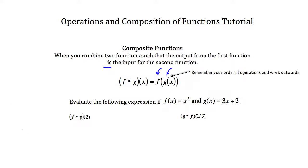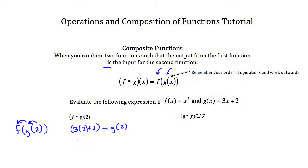Our function here is f of g of 2, so we're going to plug 2 into g and then that answer into f. g of x is 3 times x plus 2, so 3 times 2 plus 2 — that's 6 plus 2 — so g of 2 equals 8.